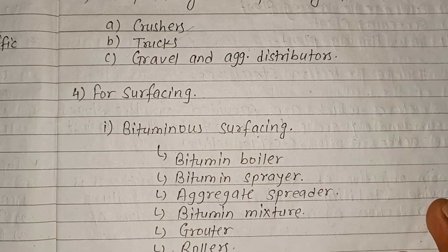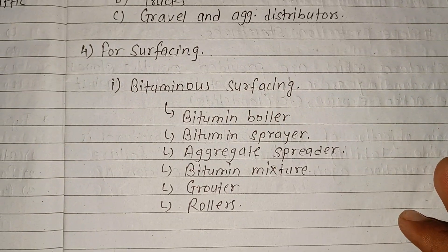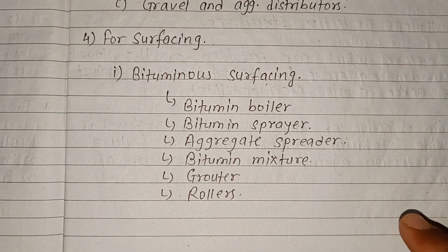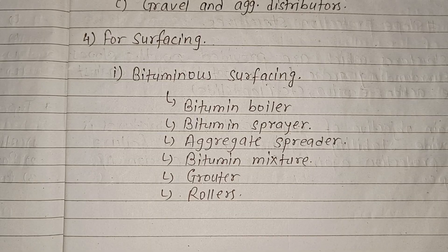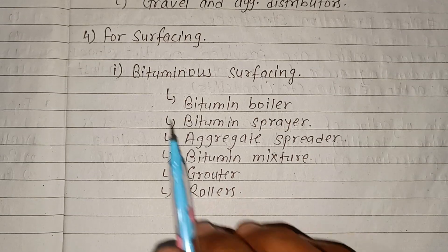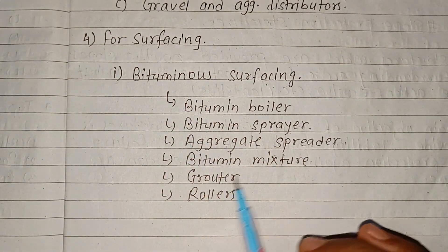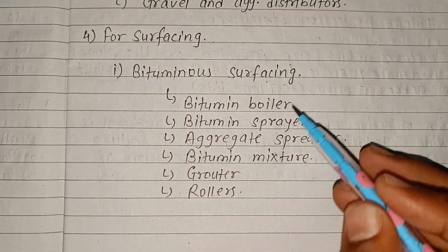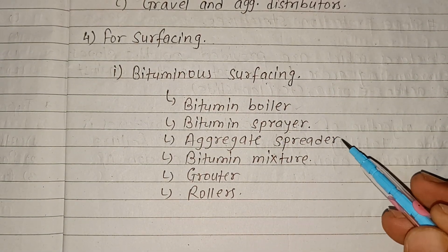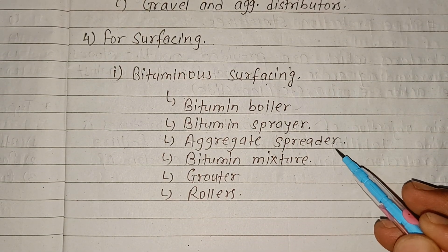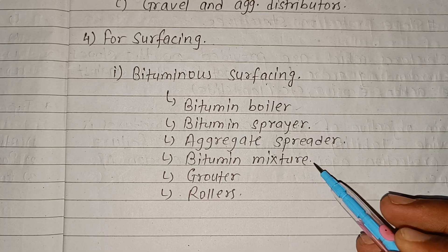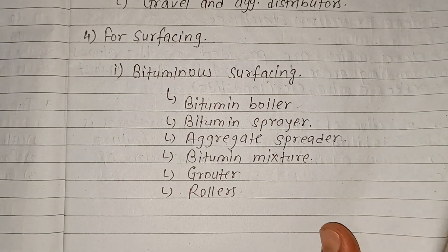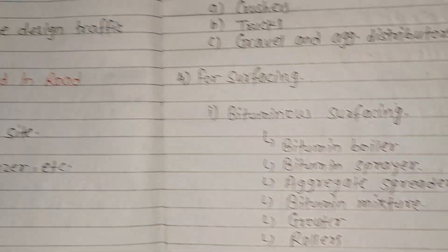For surfacing, including bituminous surface and rigid pavement, you need: bituminous boiler, bituminous sprayer, aggregate spreader, bituminous mixture, grouter, and roller.